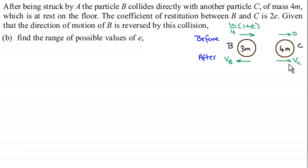You can see I've drawn a sketch here of the situation. We've got our particle B mass 3M, and from the previous part we found that its velocity after it was hit by A was U/4 multiplied by 1 plus E to the right. I've let the final speed of B be VB moving to the left because its motion has changed direction. And I've called the final velocity of C as VC to the right.